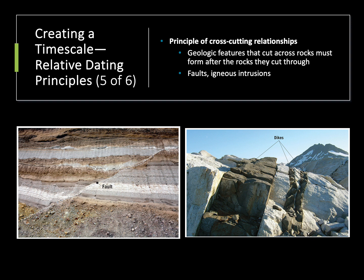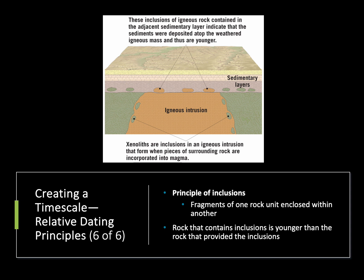We'll get to our last principle in our next video — the principle of faunal succession — but I want to end this video looking at the principle of inclusions. This is going to be really important, especially when it comes to trying to date sedimentary rocks, because sedimentary rocks are made up of inclusions — pieces of pre-existing rock, especially in those clastic rocks where we have sediments and pebbles glued together. So if we see a sedimentary rock made up of a bunch of pebbles cemented together, the inclusions — those pebbles — have to be older than the sedimentary rock, because the pebbles had to exist before they could be cemented.